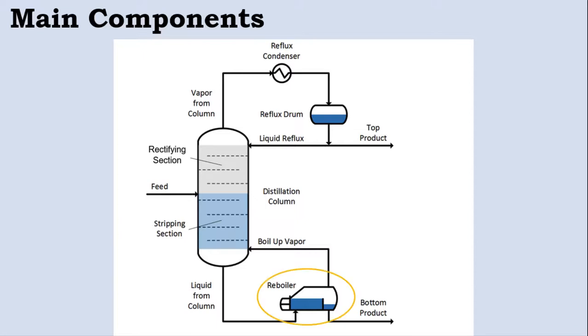A reboiler is used to provide the necessary vaporization for the distillation process. The bottom section of the distillation column is known as the stripping section. Liquid will come out of the stripping section and go to the reboiler where heat is applied and some of the liquid vaporizes and comes back into the column and then rises up. That which remains and is not vaporized goes to the bottom product and is known as the heaviest components.